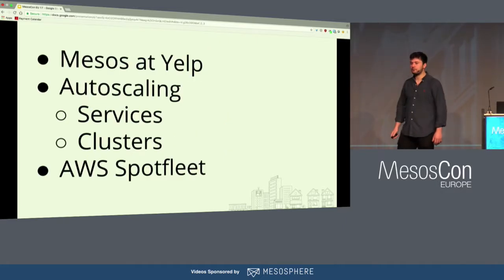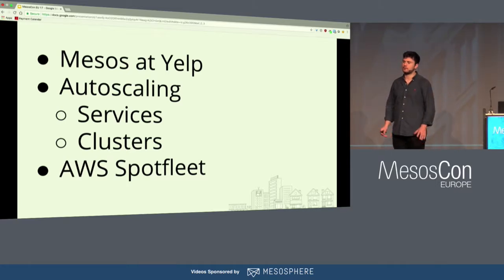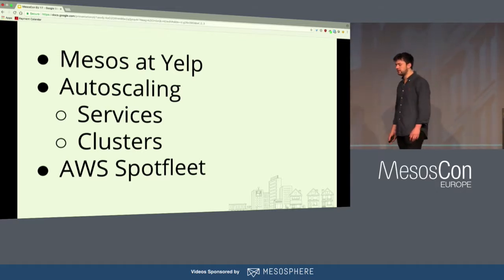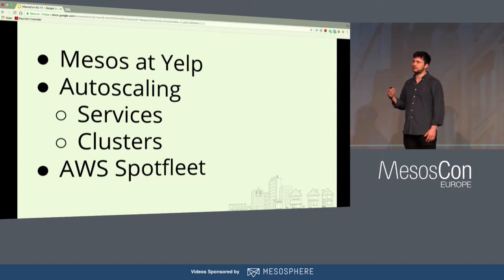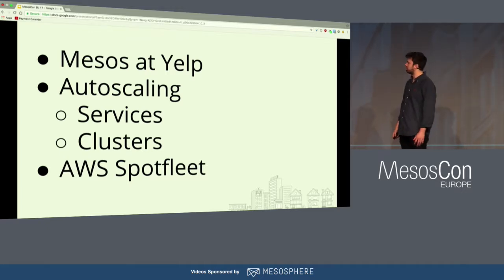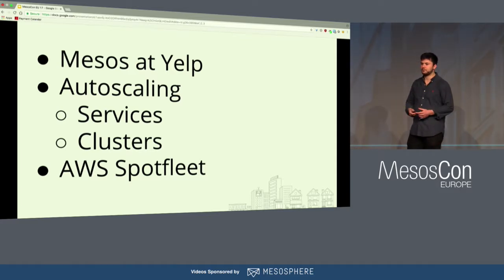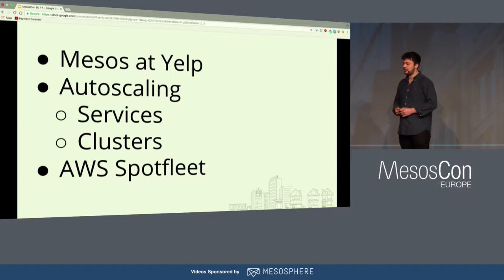To give you an idea of what we're going to go through today, I'll give you some background into how we use Mesos at Yelp and the scale that we run at. Then I'm going to talk about auto-scaling at two separate levels: the service level and the cluster level. And finally I'm going to talk about AWS SpotFleet — what it is, the pitfalls, the value over regular EC2 instances, and strategies for dealing with those pitfalls.